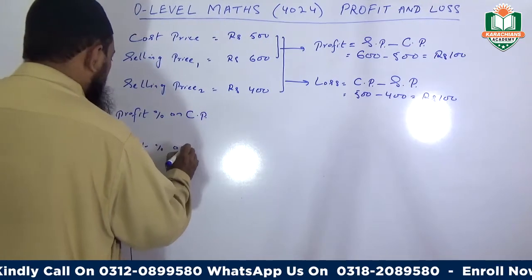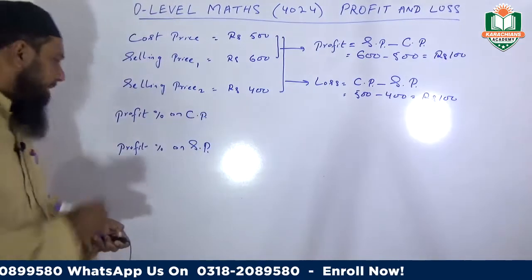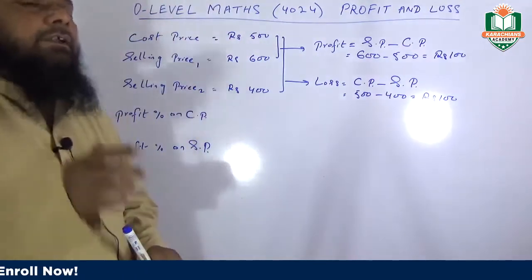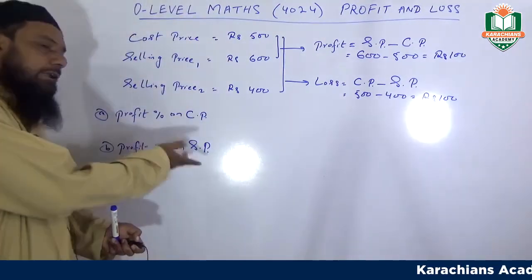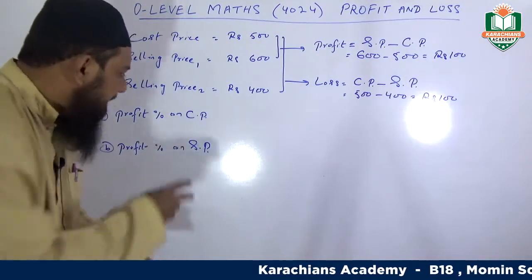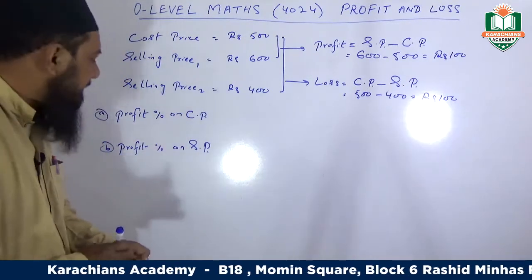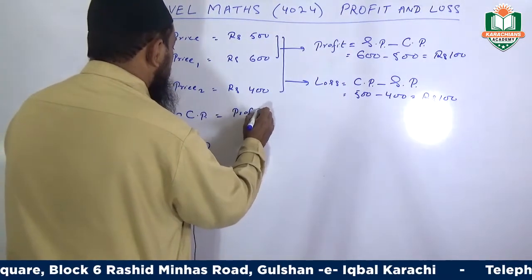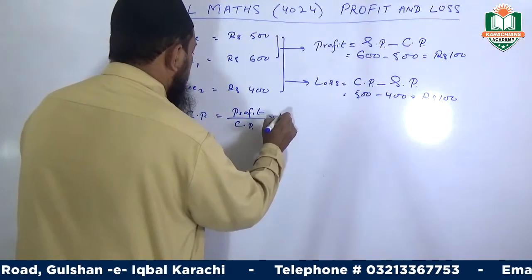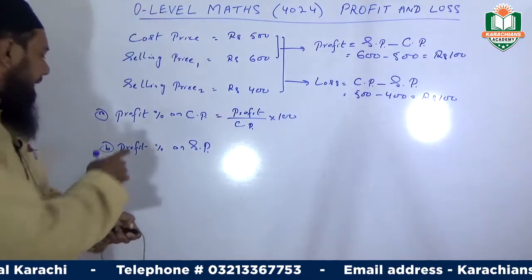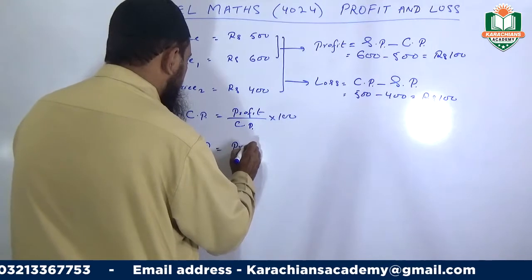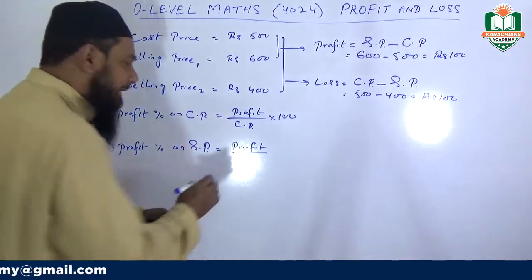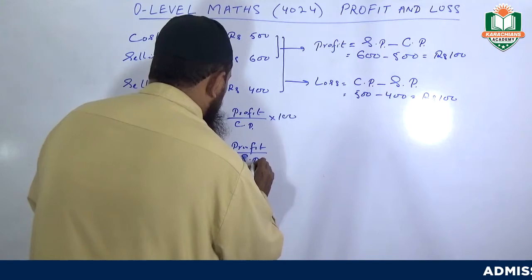There are two formulas: profit percentage on cost price and profit percentage on selling price — both formulas are different. Profit percentage on cost price means profit over cost price multiplied by 100. Profit percentage on selling price means profit over selling price multiplied by 100.